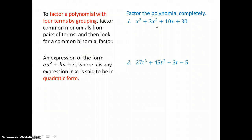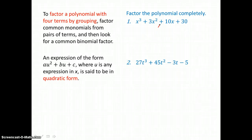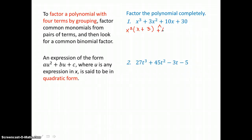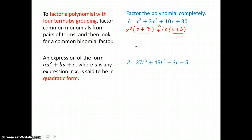Here we're factoring a polynomial in four terms. We start in standard form, look for a greatest common factor, and when there is none, we use a method called grouping. We break the terms into two groups and take out the GCF of the first two terms — x squared — leaving x plus 3. Check: x squared times x is x cubed, and x squared times 3 is 3x squared. Then in the second two terms, we take out a GCF of 10, leaving x plus 3 again. 10 times x is 10x, and 10 times 3 is 30. So it's factored correctly.